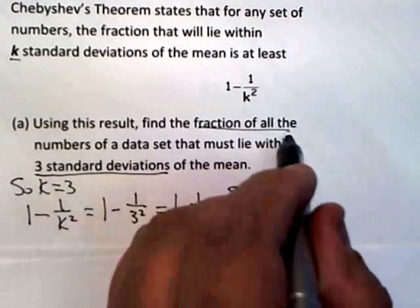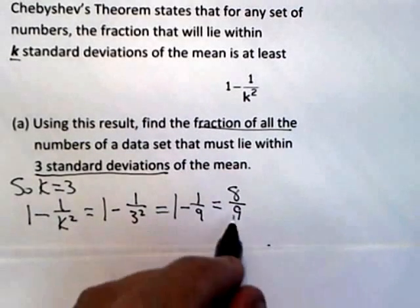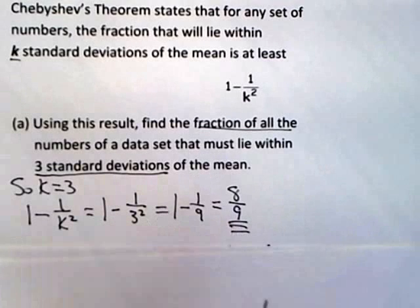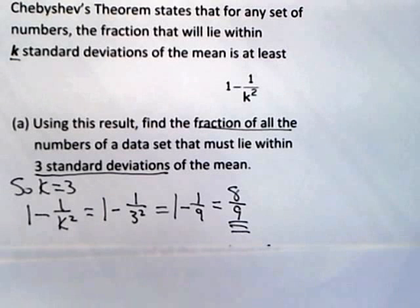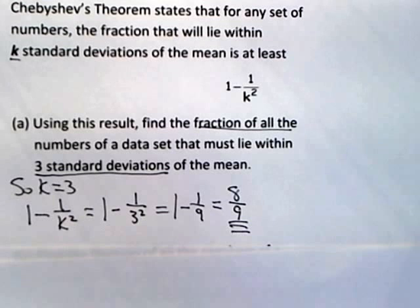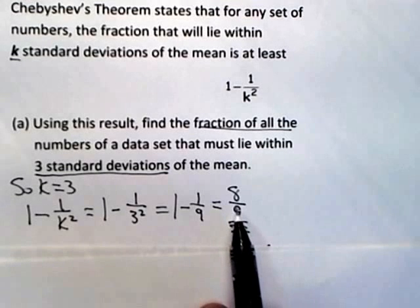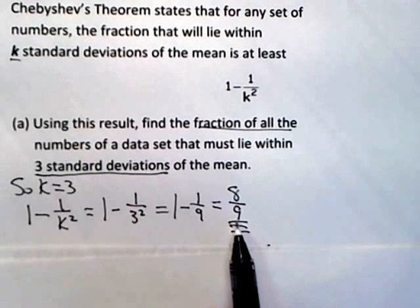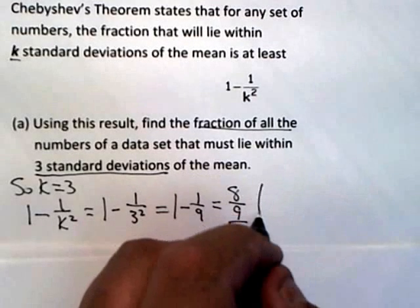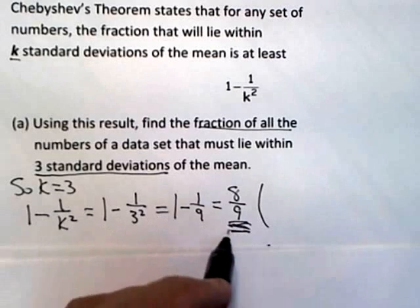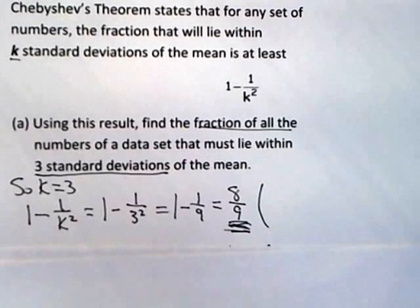So the fraction of all the numbers of a data set that must lie within three standard deviations of the mean is 8 ninths. One other thing to note: this problem could be stated slightly differently. If they ask for a probability instead of a fraction, you'd probably want to write the answer as a decimal.